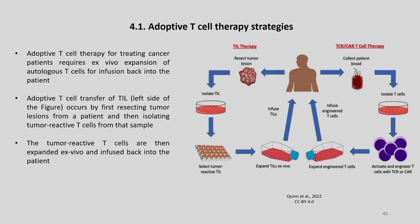Adoptive T cell therapy for treating cancer patients requires ex vivo expansion of autologous T cells for infusion back into the patients. Adoptive T cell transfer, shown on the left side of this figure, occurs by first resecting tumor lesions from a patient and then isolating tumor-reactive T cells from the sample. The tumor-reactive T cells are then expanded ex vivo and infused back into the patient.